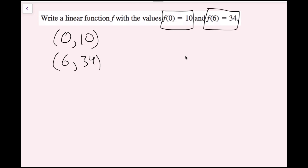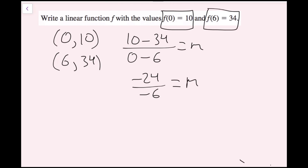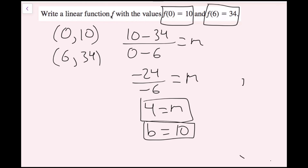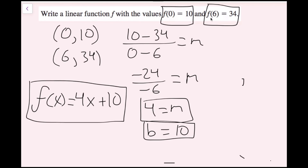Using y2 minus y1 over x2 minus x1, I'll do 10 minus 34 over 0 minus 6 to find my slope. That gives negative 24 over negative 6, which simplifies to 4. My slope is 4. Looking back, my x is 0, so my y-intercept is 10. The y-intercept is the value of y when x is 0, so b equals 10. Writing in function notation: f of x equals 4x plus 10.